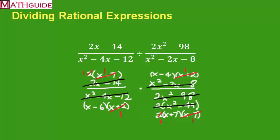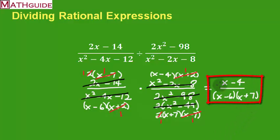So what's left? I'm going to multiply across. I got an x minus 4 as the only term in the numerator. And in the denominator, it looks like I've got two terms, x minus 6 and x plus 7. There you have it. That is the answer to this problem. There's nothing else that I could cancel. That is example 1.